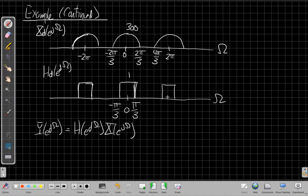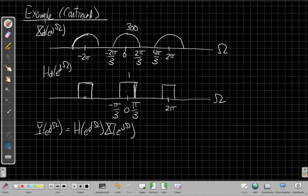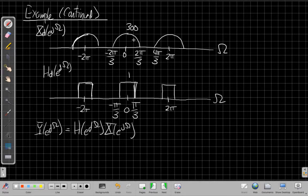What that means is that between minus π/3 and π/3, we multiply the rainbow by 1, and outside of that, I multiply it by 0. If I overlay this copy, it says I'm multiplying by 1 in here and leaving it unchanged.